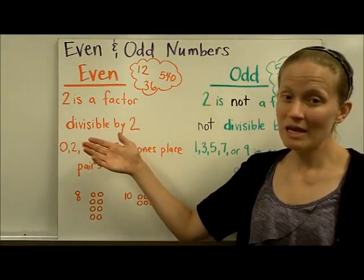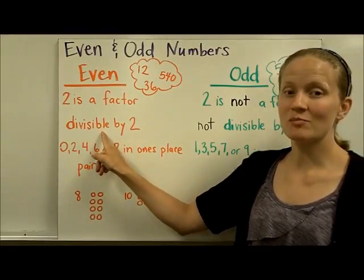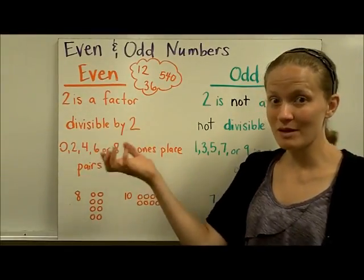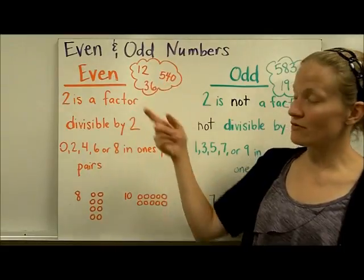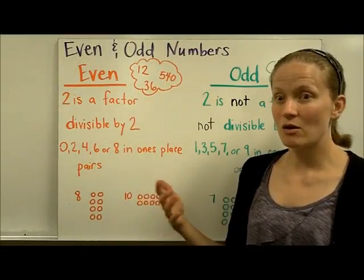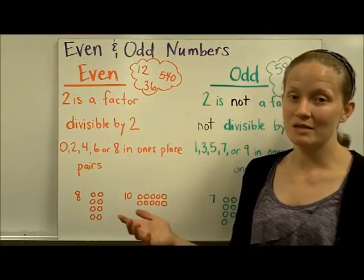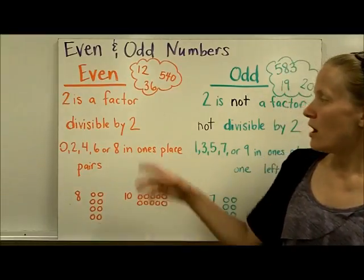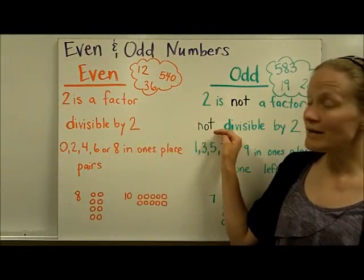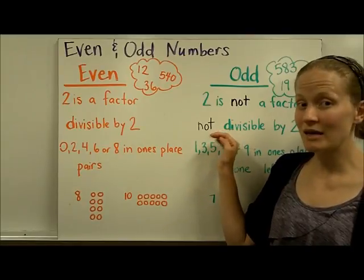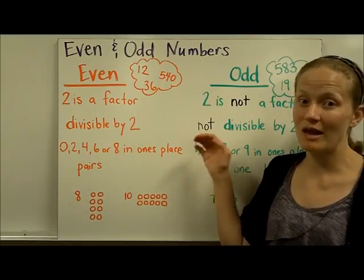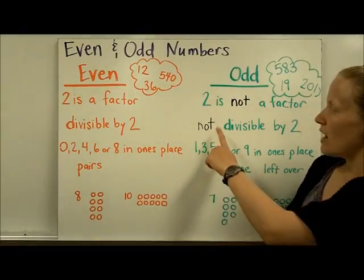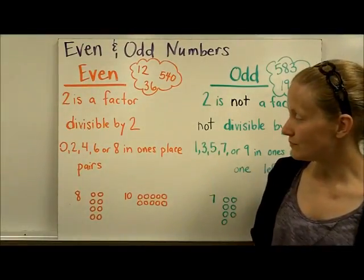Another way to say the same thing is that an even number is divisible by 2. Basically, if you take an even number and divide it by 2, you're going to get a whole number as an answer — no remainder. On the other hand, if you divide an odd number by 2, you're not going to get a whole number. You're going to have a remainder, or a decimal if you use a calculator. So an odd number is not divisible by 2.